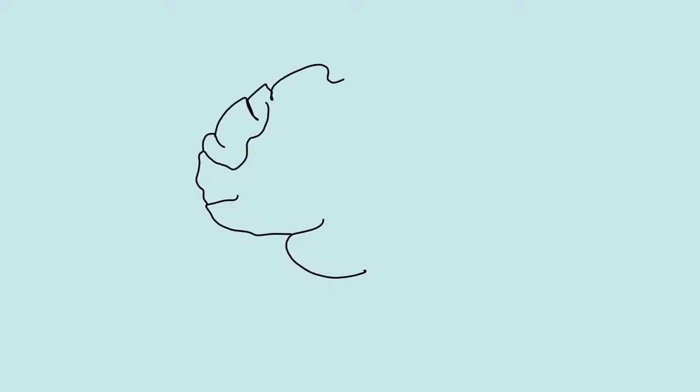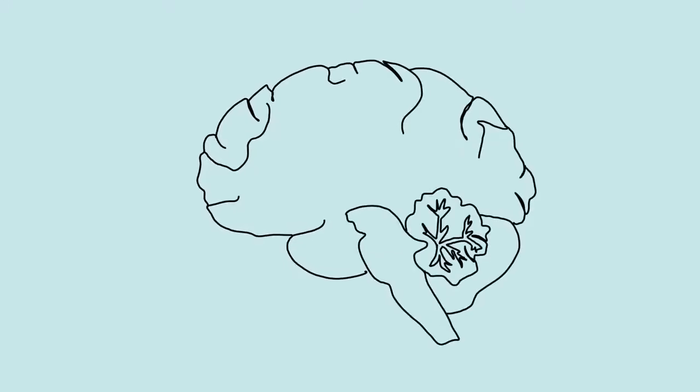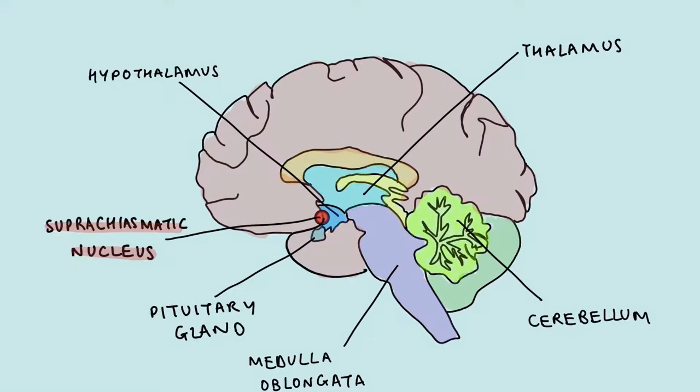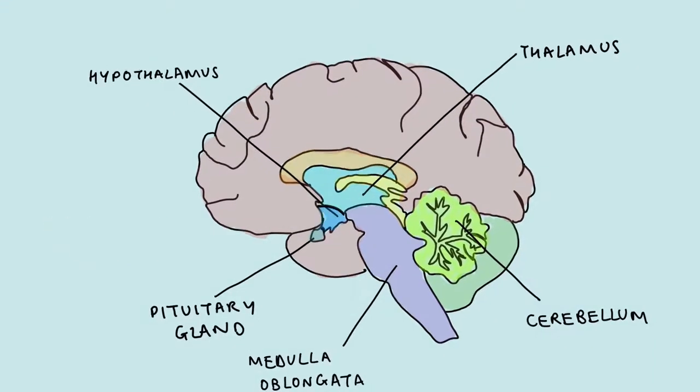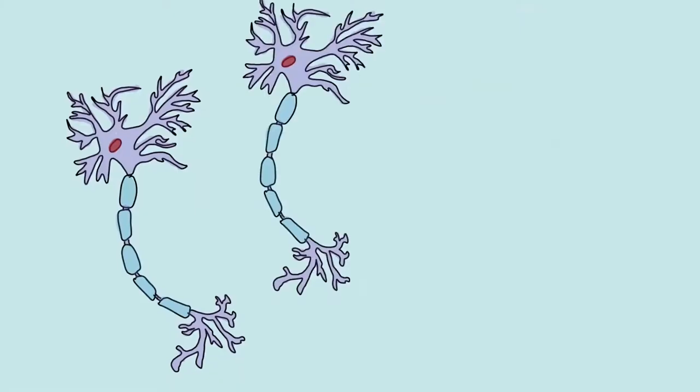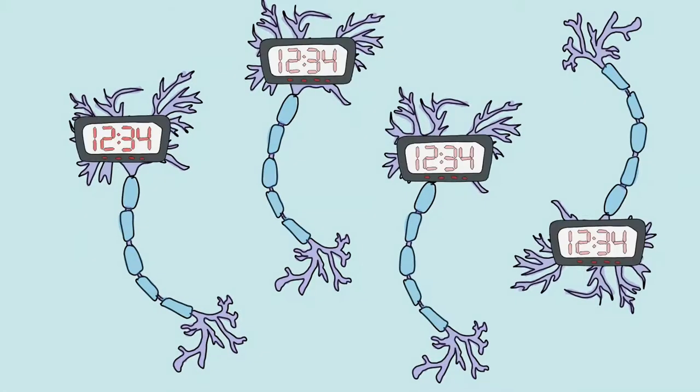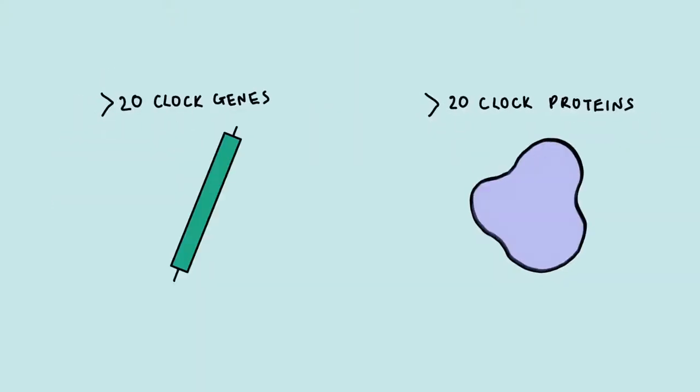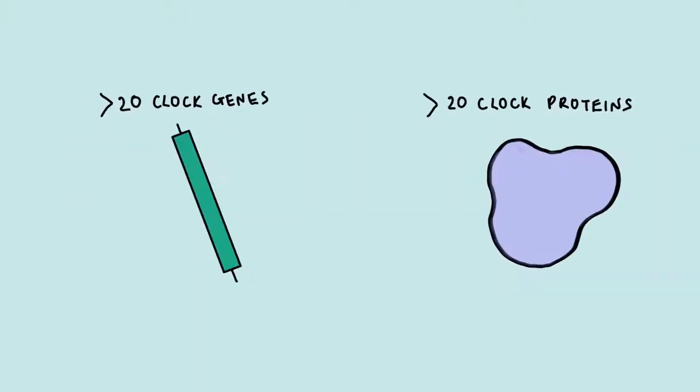To understand how your body tells the time we need to look at the brain. The circadian rhythm is controlled by a cluster of neurons called the suprachiasmatic nucleus. Within the suprachiasmatic nucleus each individual cell is controlled by a kind of molecular clock. This is regulated by over 20 clock genes and the proteins that they code for.